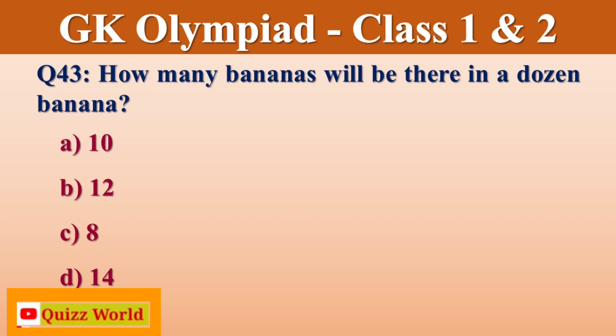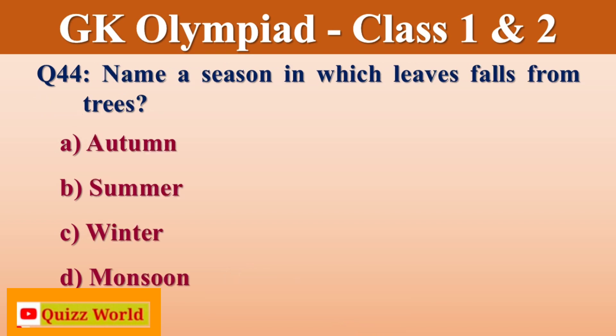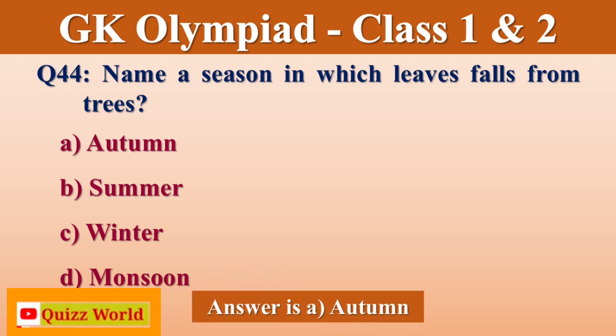How many bananas are there in a dozen? 10 or 12. Right answer is 12. Name a season in which leaves fall from trees. Options: Summer, Winter, Monsoon. Right answer is Autumn.